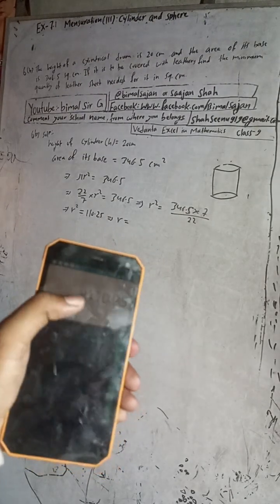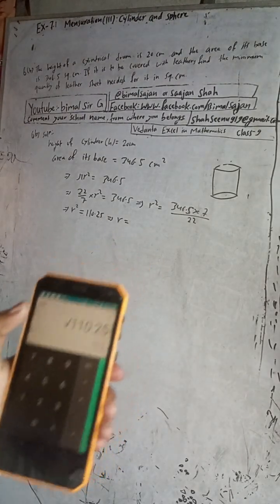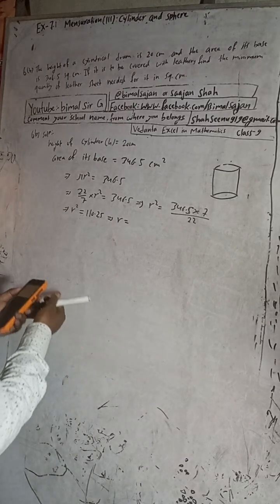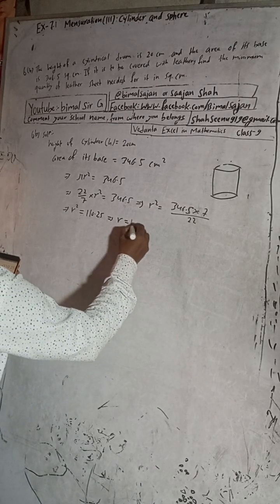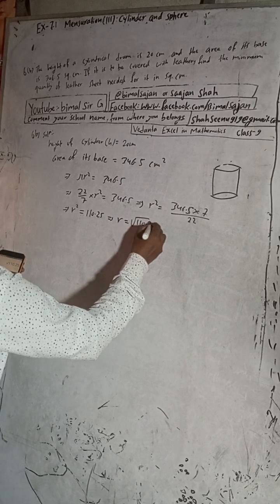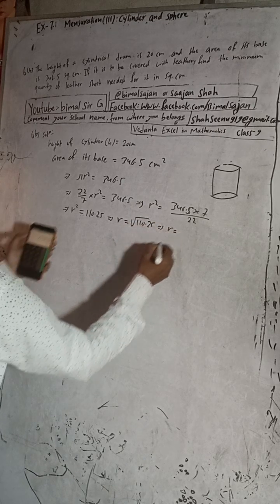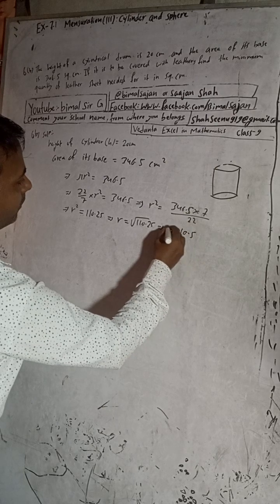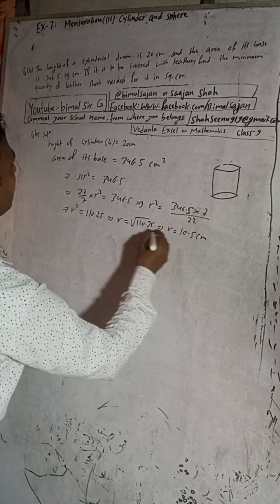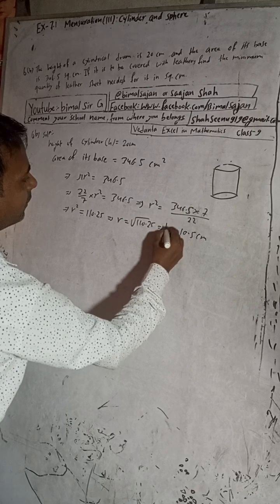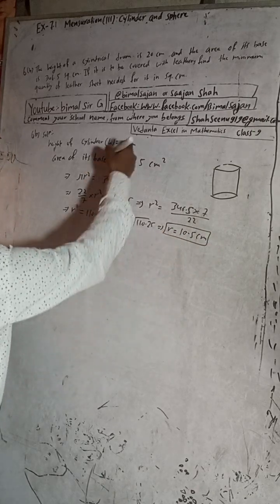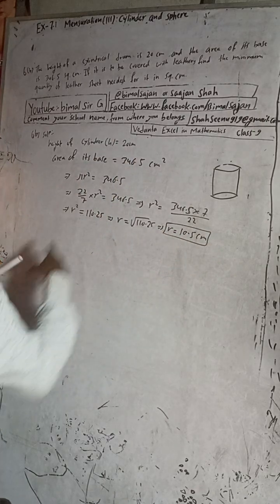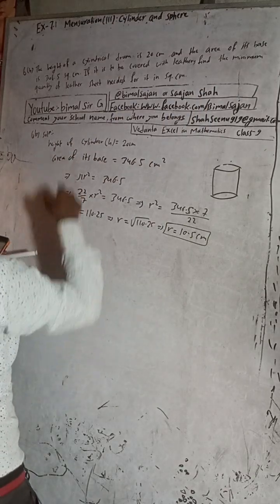So you can see here, r = 10.5. We can get r is equal to √110.25, that implies r is equal to 10.5 cm. Now we know radius, we know height. Now, find the minimum quantity of leather sheet needed for it.